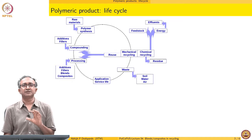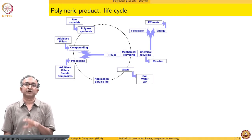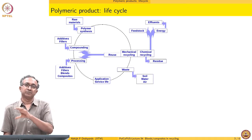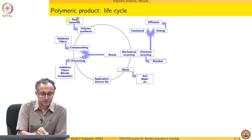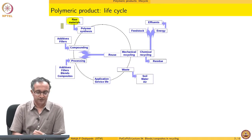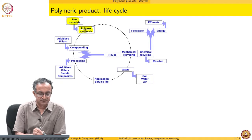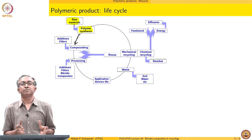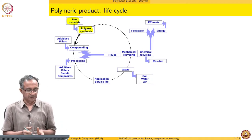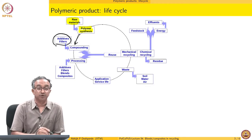If you look at the overall life cycle of a product — we have talked about biogeochemical cycles and how from raw material there is always a cycle going back to the raw material itself. If you look at a polymer product, raw materials come from petroleum, then we have polymer synthesis. From polymer synthesis, the polymer is generally compounded with some additives and fillers so that it is ready to be processed.